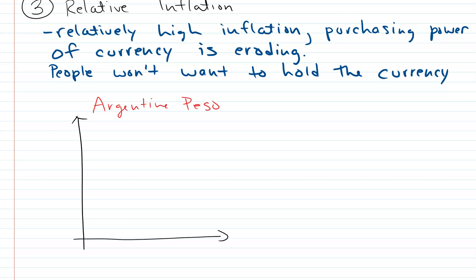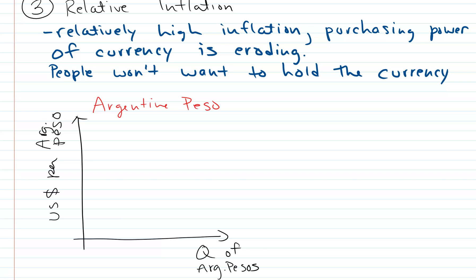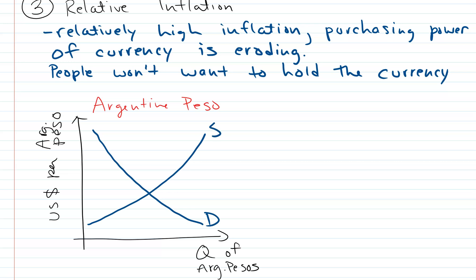We have the number of US dollars per Argentine peso on the vertical axis — and note this is the Argentine peso, not the Mexican peso — and on the horizontal axis we have the quantity of Argentine pesos. We start at some kind of equilibrium; the exact exchange rate isn't that important, we just need to know which direction it's moving.